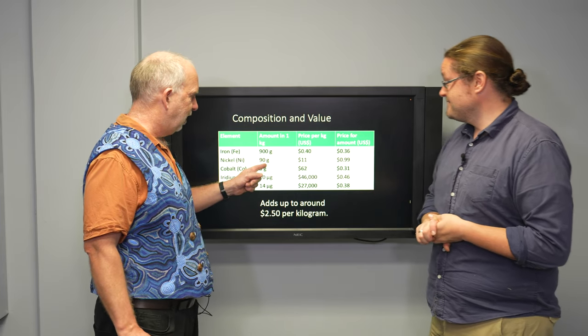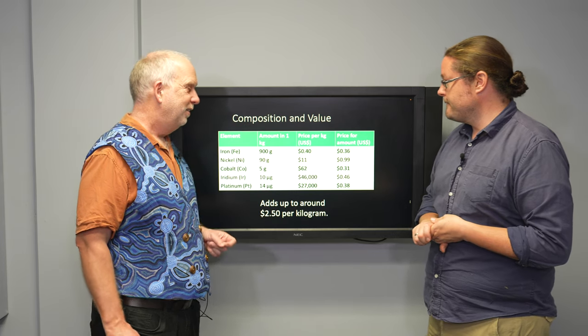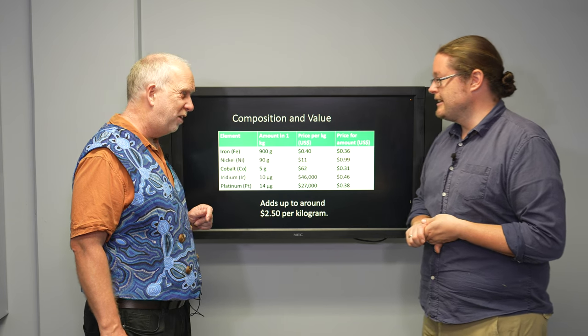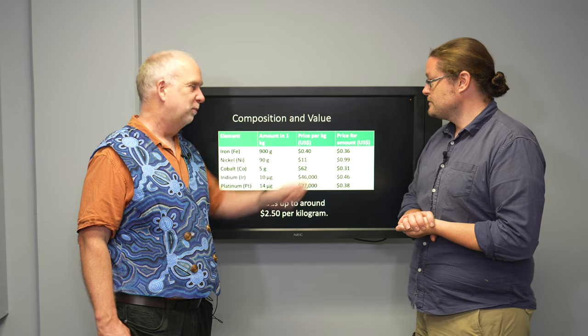The nickel, there's less of it, only 9%, but it's worth a lot more. It's $11 per kilo, so that's actually worth nearly a dollar. But then some of these trace elements, there's 5 grams of cobalt. Not very much, but cobalt is $62 a kilogram, so that's 31 cents, about as much as the iron.